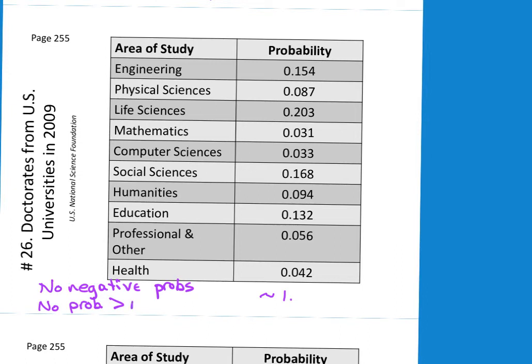So no negative probabilities and no probabilities greater than 1. In fact, the probability of an event is always going to be greater than or equal to 0, or 0 is going to be less than 1, and the probability of the event is always going to be less than or equal to 1. This is an impossibility at 0 and a certainty at 1.